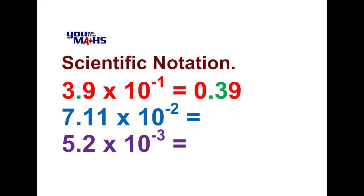In the next example we've got 7.11 multiplied by 10 to the negative 2. So our decimal point moves two positions to the left and our solution becomes 0.0711. And finally we need to move the decimal point three places to the left so our answer becomes 0.0052. You'll notice again that all the digits in green indicate the movement to the left of the decimal point.